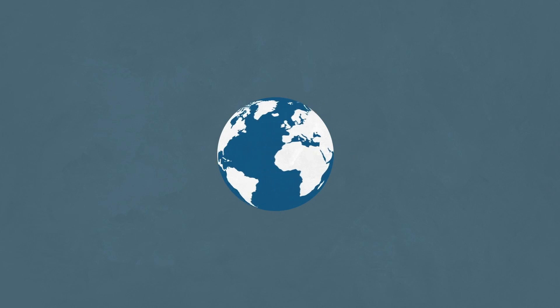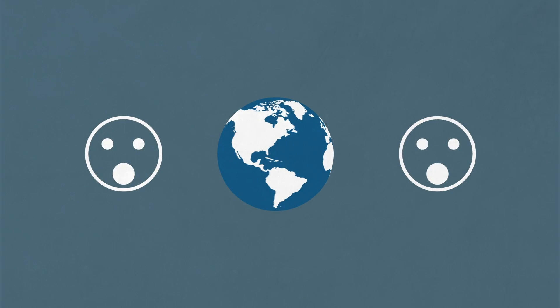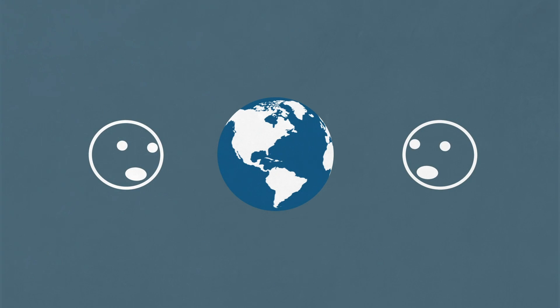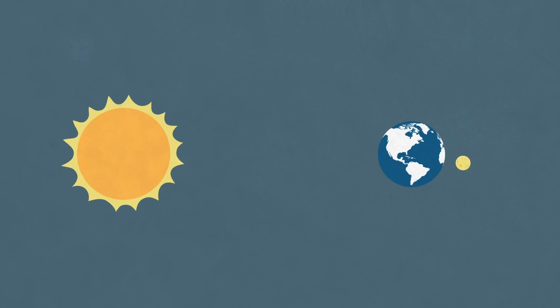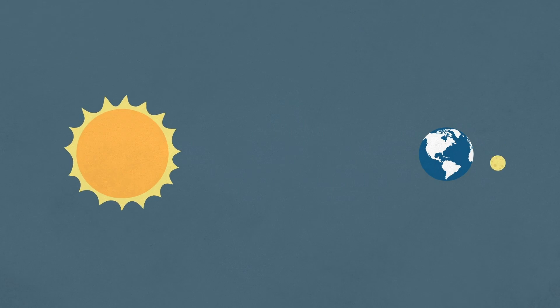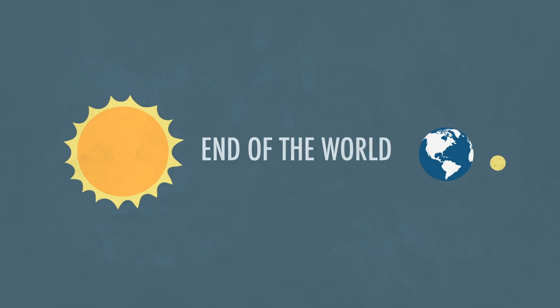Have you ever wondered what would happen if the Earth stopped spinning? It's something we take for granted, but actually plays a huge role in how we live and the fact that life is able to exist on Earth in the first place. There's far more at stake here than just the cycle of day and night, and if it were to happen, it could spell the end of our planet as we know it.